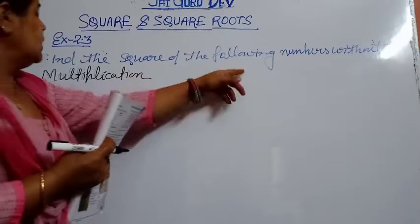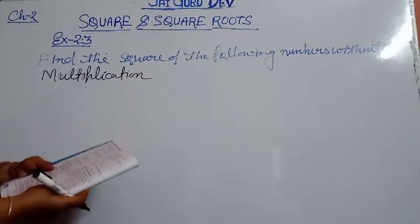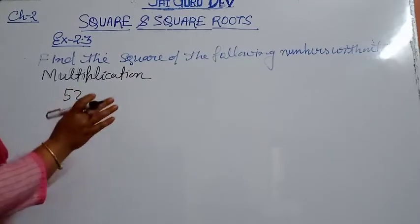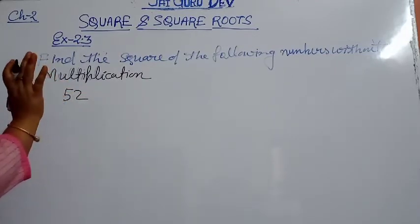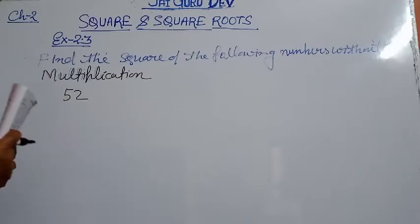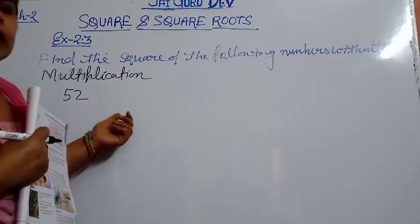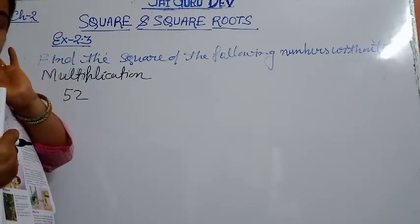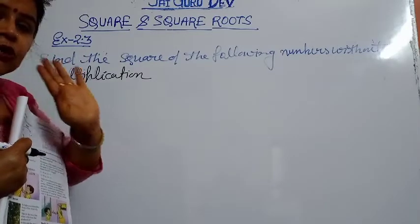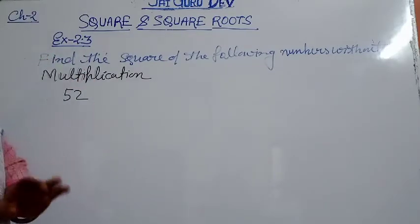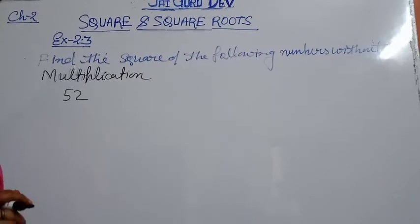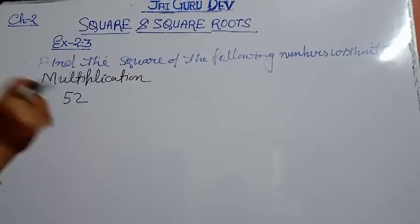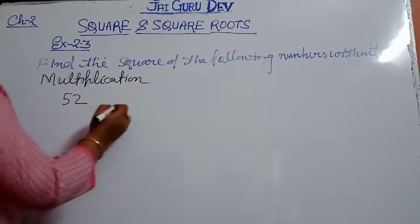Find the square of the following numbers without multiplication. We have 52. He is saying not to do 52 multiplied by 52. What is the other way? We have one formula — let me write it here and you write it in your copies.